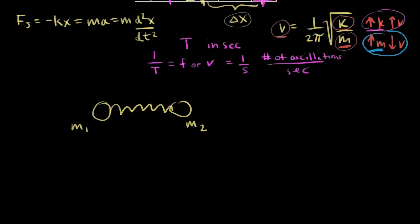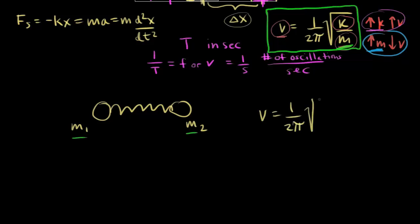We have to amend the frequency equation slightly. The frequency of oscillation is one over two pi times the square root of k over m, but this assumes only one mass is moving. When both masses move in a stretching vibration, we can't simply use m — we use what's called the reduced mass.